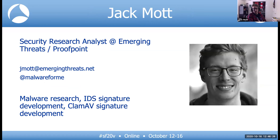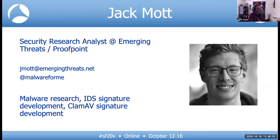My name is Jack Mott. I'm a security research analyst with the Emerging Threats team, which was acquired by Proofpoint a number of years ago. We primarily put out network threat intelligence in the form of block lists, IDS signatures, and work really closely with the Suricata development team to put out rulesets specifically made for Suricata. In addition to that, I enjoy looking into malicious documents, writing CLAM-AV signatures against that kind of stuff, exploits. You can find me on Twitter — my handle's there, as is my email if there are any questions post-presentation.